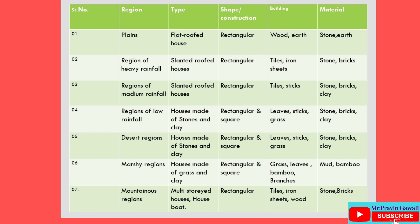Fourth region: Regions of low rainfall. Type: houses made of stones and clay. Construction: rectangular and square. Building material for roof: leaves, sticks, grass and stone. Material for walls: bricks and clay.